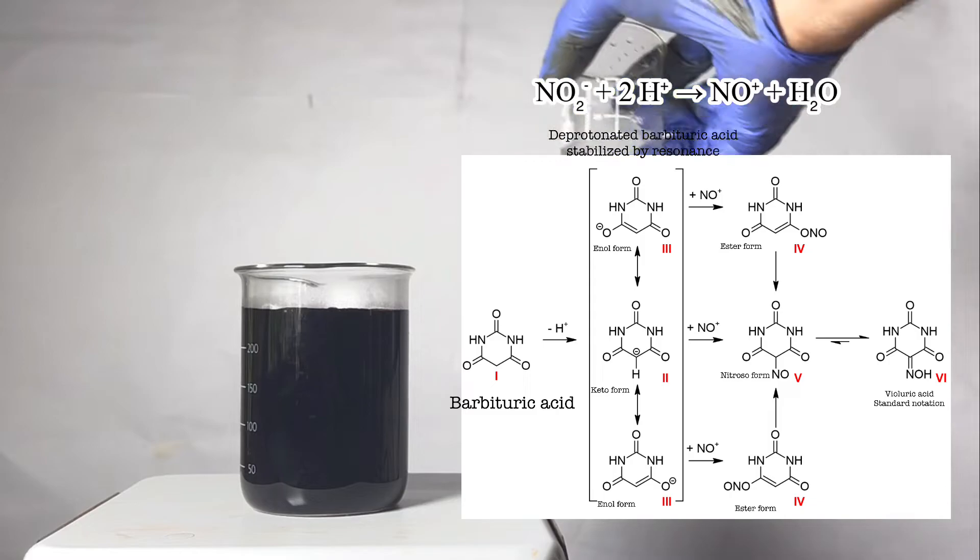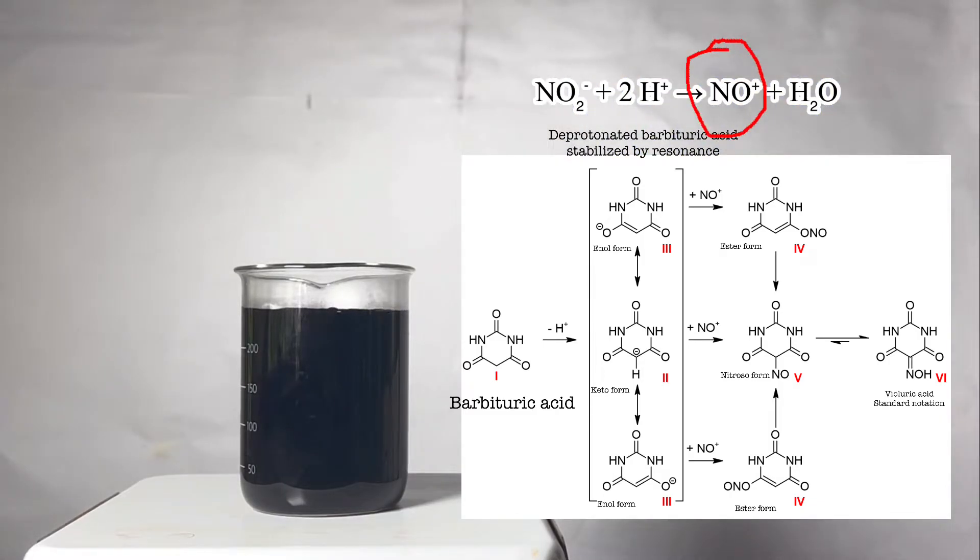And then it makes the nitrosyl ion available through further protonation. The deprotonated barbituric acid is slightly stabilized by resonance and therefore quite acidic. It can have deprotonated keto and enol forms.